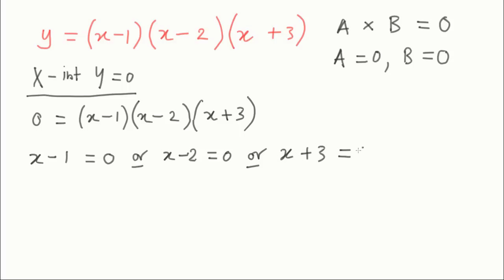So we can pick out each of those things one at a time and let them all equal zero. That's the step where you're actually using the null factor law. From here it's just a matter of solving each of those little equations, and you'll end up with x equals 1, 2, or minus 3. Those are the three x-intercepts.